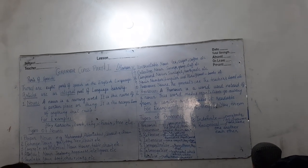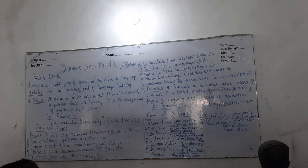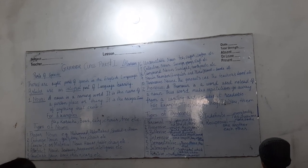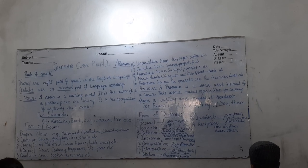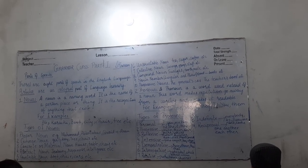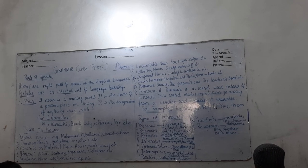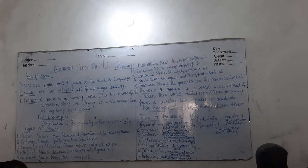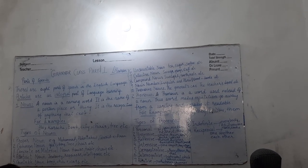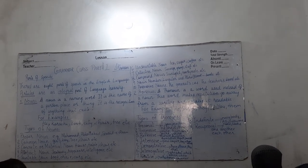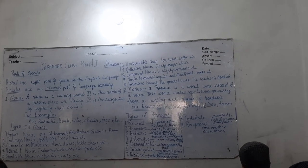There are nine types of pronouns: personal, possessive, reflexive, intensive, demonstrative, interrogative, relative, indefinite, and reciprocal. Starting with personal pronouns — these are pronouns that refer to a specific person or thing. For example: I, you, me, him, he, she, it, and they.